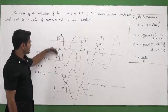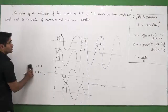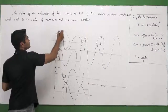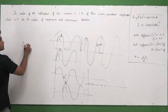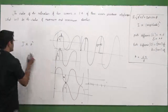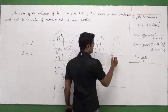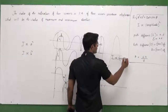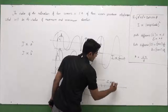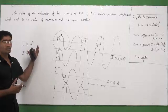Constructive interference is when the waves fall in phase, and destructive is when they fall out of phase. Now, the formula for intensity — intensity is the brightness of the wave — is given as: I is proportional to a squared for the first wave, proportional to b squared for the second wave, and proportional to a minus b squared in the case of destructive interference.